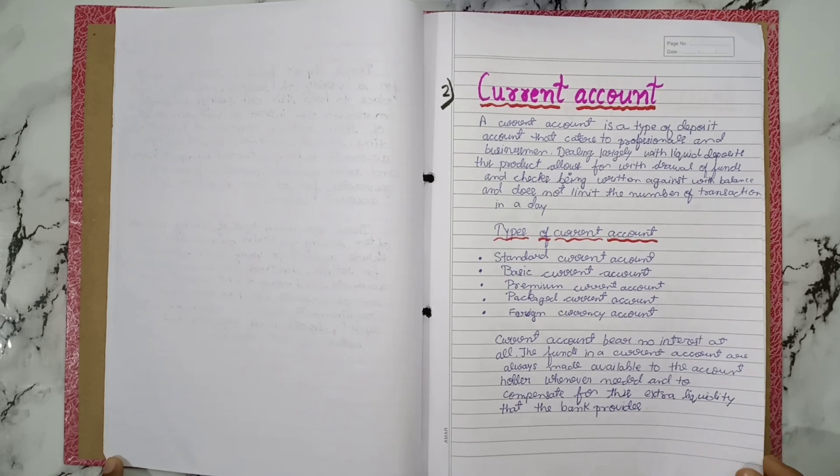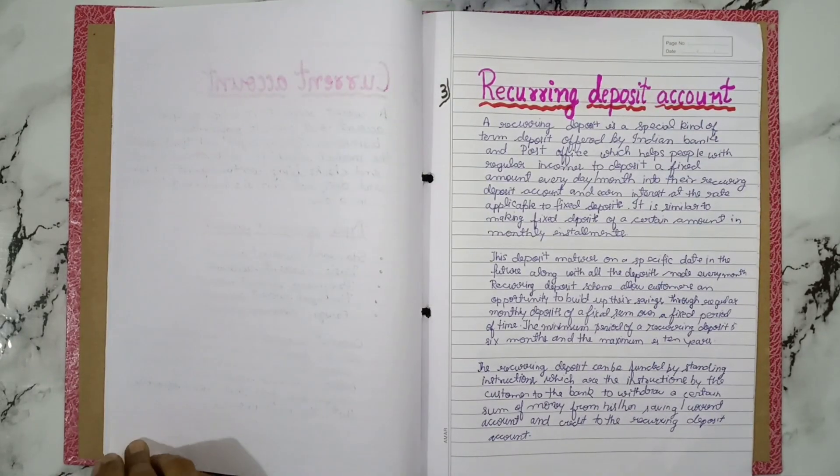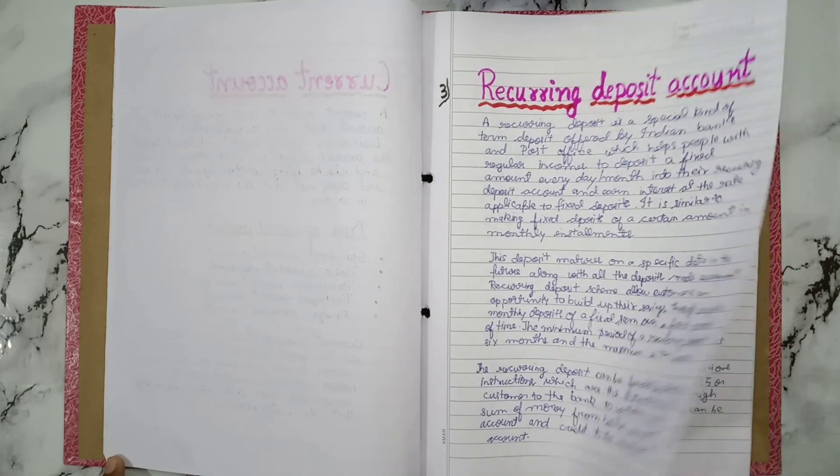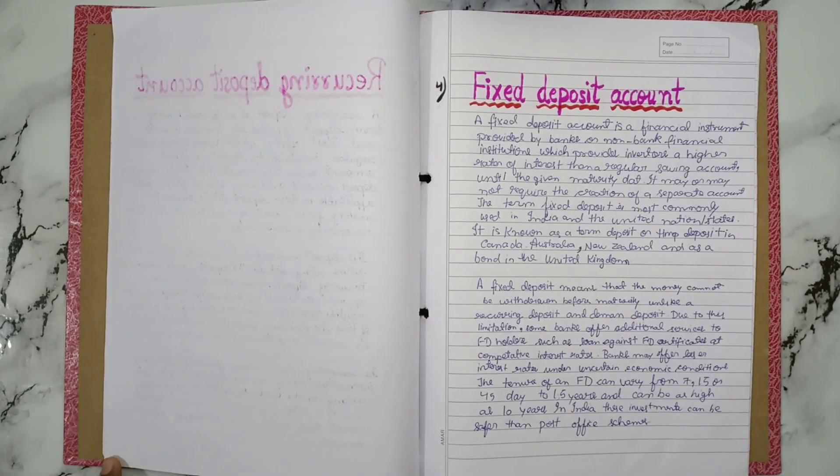Current account, saving account, recurring deposit, fixed deposit.